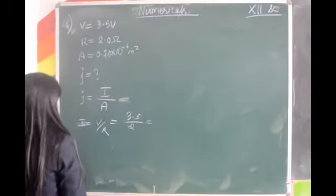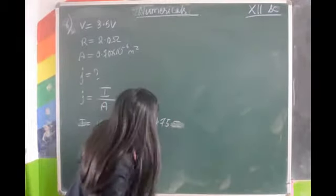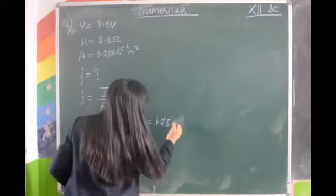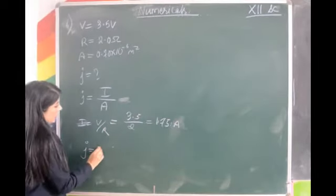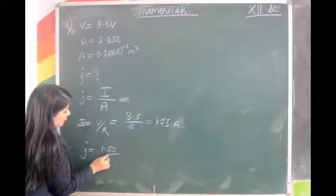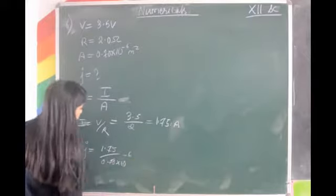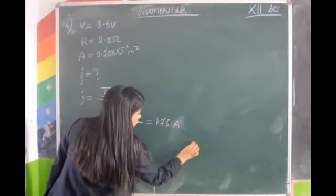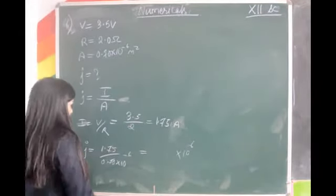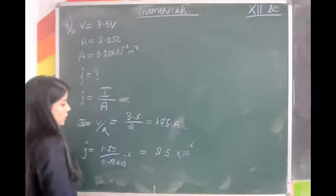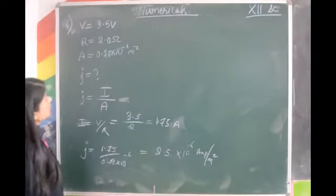V is 3.5 and R is 2 ohm. After doing the calculation, we get I = 1.75 ampere. Now we have the current, we can find the current density J equals I by A. Our I is 1.75 and area is 0.70×10⁻⁶ m². So 10⁻⁶ goes out and becomes 10⁶. 1.75 divided by 0.70 gives 2.5. The unit of current density is ampere per metre square. This is question number 6.